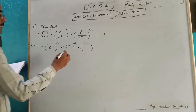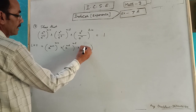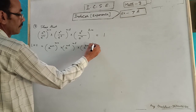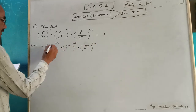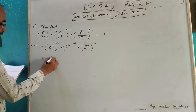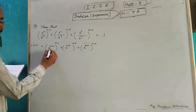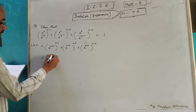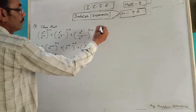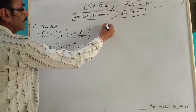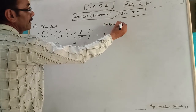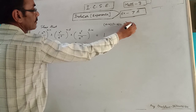Third bracket: a^(l+m), common power l minus m. Multiply power by power. Using the identity (a+b)(a-b) = a² - b², we get a^(m² - n²) into a^(n² - l²).